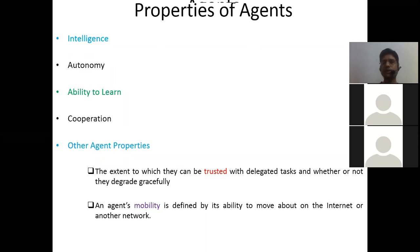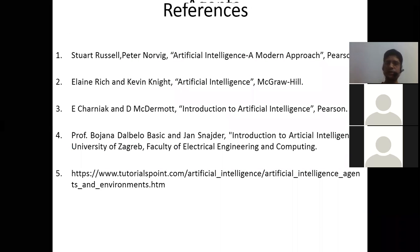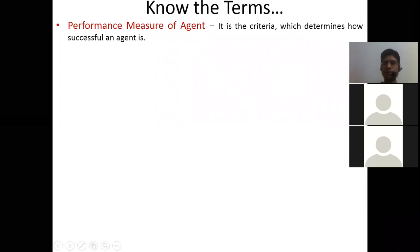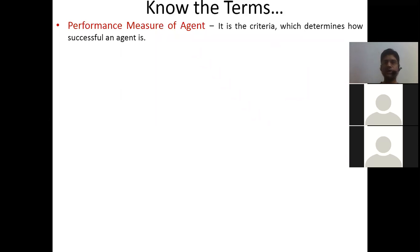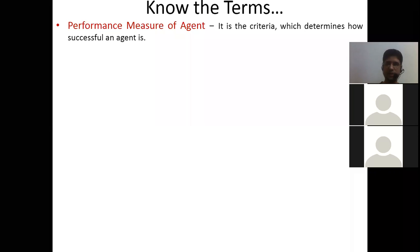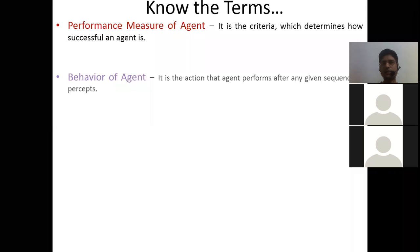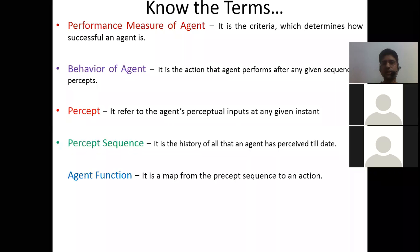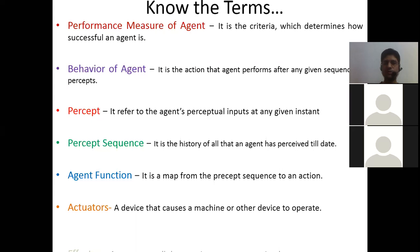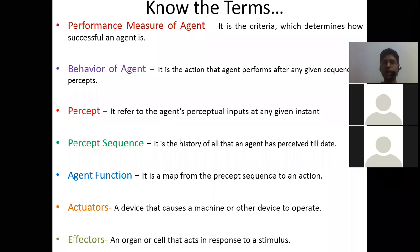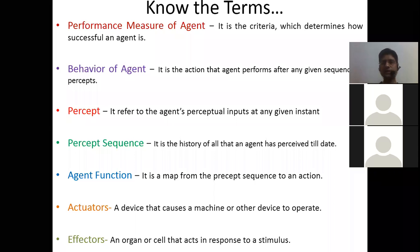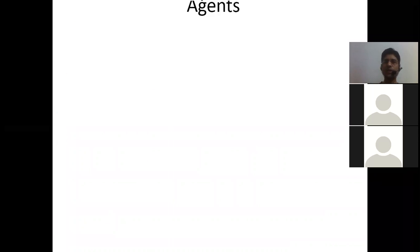We are revising the intelligent agent topic. In the next class, we will discuss the different types of intelligent agents. Today we introduced the intelligent agent and covered terminology: performance measure of agent, behavior of agent, percepts, percept sequence, agent function, actuators — devices that cause a machine to operate — and effectors — an organ or cell that acts in response to a stimulus. Effectors are for actions; sensors are for taking input.